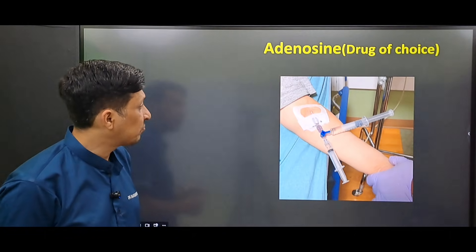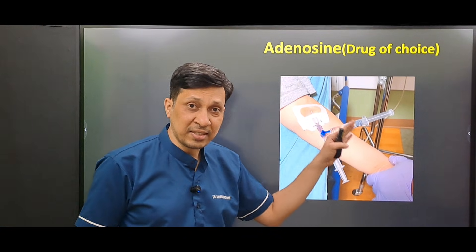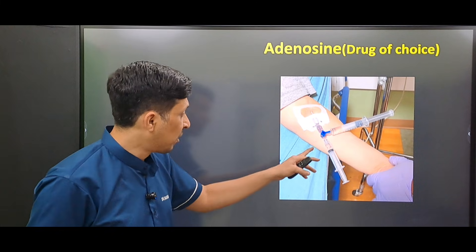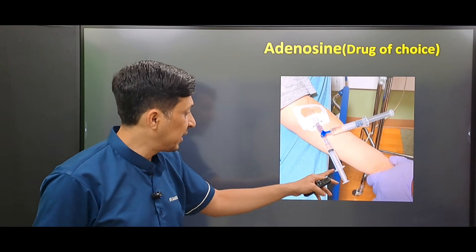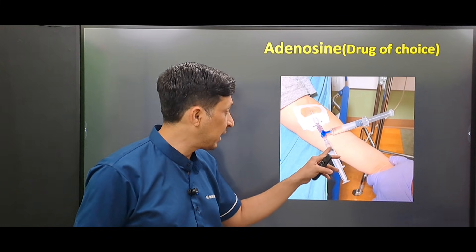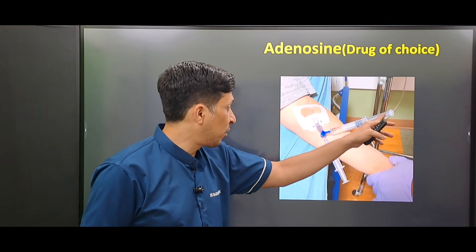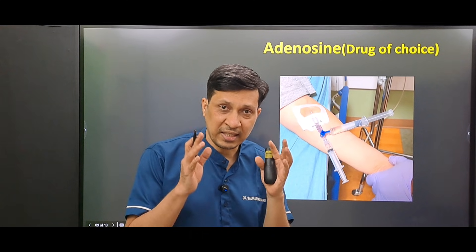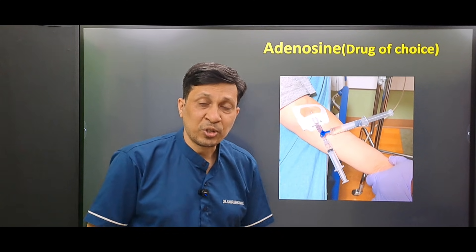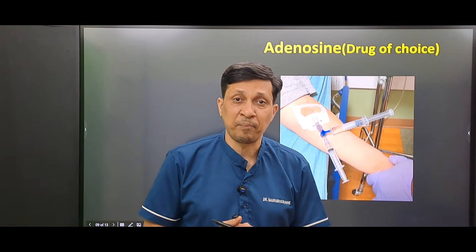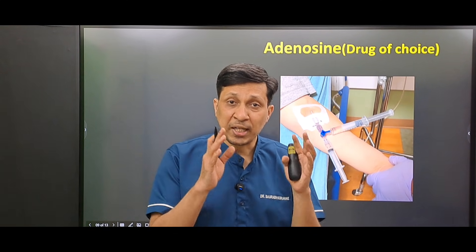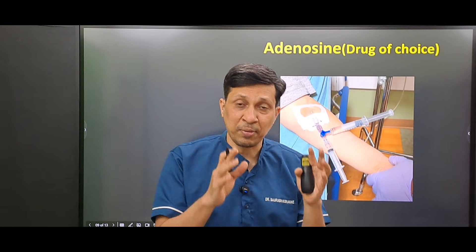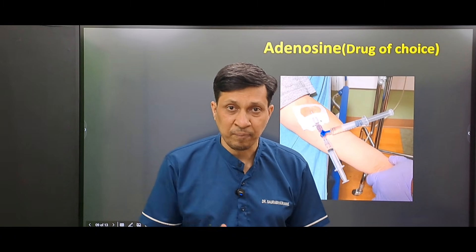Adenosine is given using a two-syringe method: from one syringe the actual dose is injected, and from the other syringe a flush of normal saline is given. This is the second step of management of supraventricular tachycardia in a stable patient.